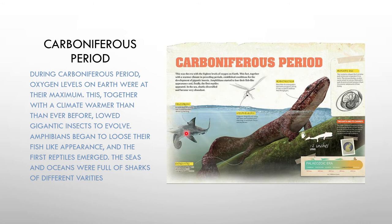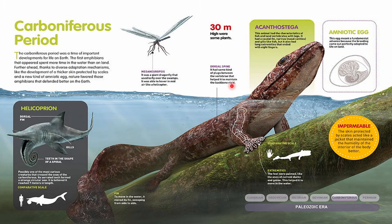Sharks called Helicoprion came — as you can see, they had a saw-like jaw in their mouth, which they used to hunt. These were 23 feet long. Many sharks, insects, and amphibians began in this era. The trees of this time were 30 meters long. Helicoprion was 7 meters in length compared to a human, and Acanthostega had developed bones in it, while sharks have cartilage.